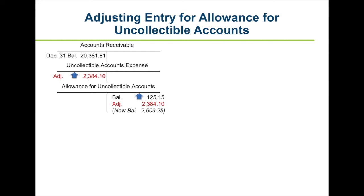Four questions are used to analyze the adjustment. One: what is the balance of the account being adjusted? — $125.15. Two: what should the balance be? — a credit of $2,509.25. Three: what must be done to correct it? — increase allowance for uncollectible accounts by $2,384.10, the difference between the beginning and new balance. Four: what adjusting entry must be made? — debit uncollectible account expense $2,384.10 and credit allowance for uncollectible accounts $2,384.10.